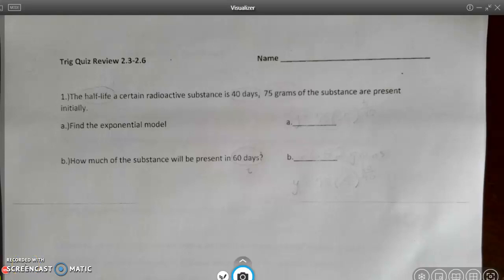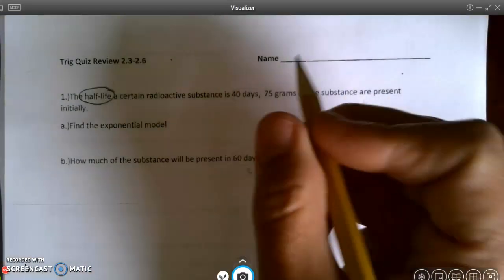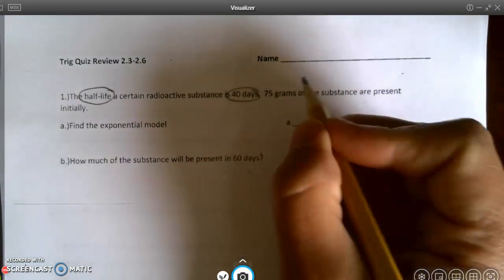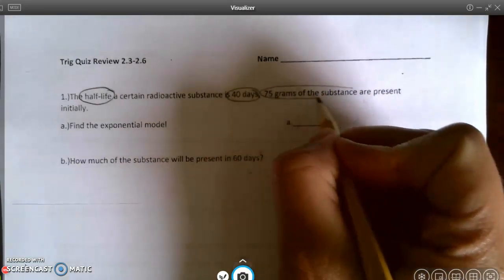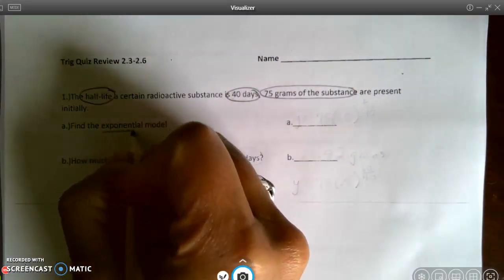All right, so let's look at our quiz review for sections 2.3 through 2.6. The half-life of a certain radioactive substance is 40 days. 75 grams of the substance are present initially. Find the exponential model.